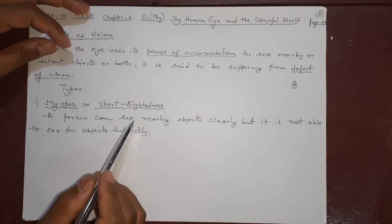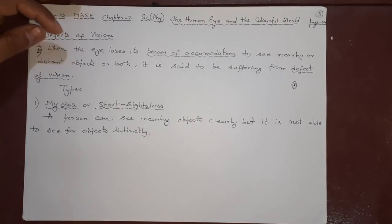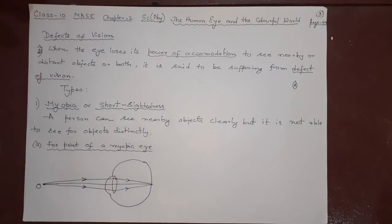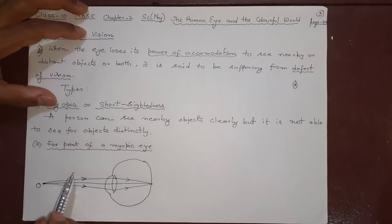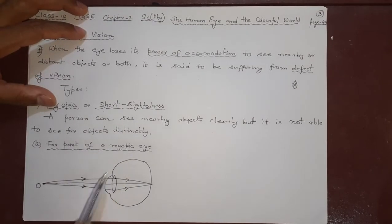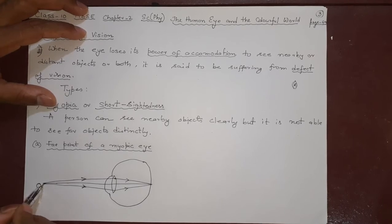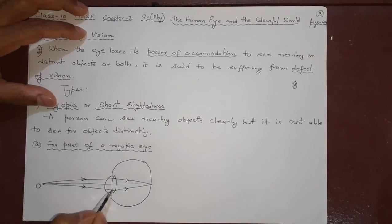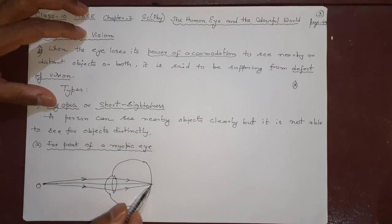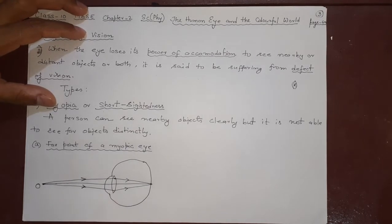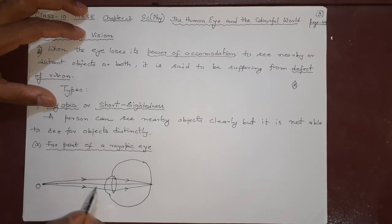Short-sightedness means short distances you can see, far you cannot. In this diagram, the far point of a myopic eye — why it is not able to see far objects — is because if an object is somewhere not very far, these rays are able to converge by the convex lens of the eye onto the retina. But this should not happen here; actually this should happen with parallel rays of light, which is not possible for a myopic eye.